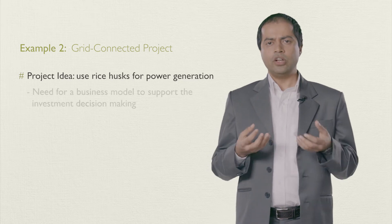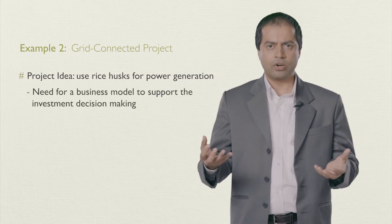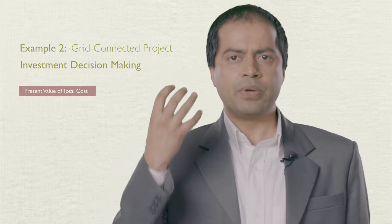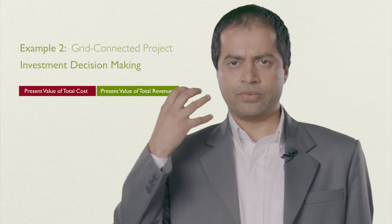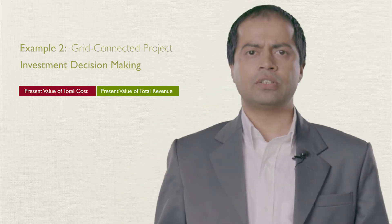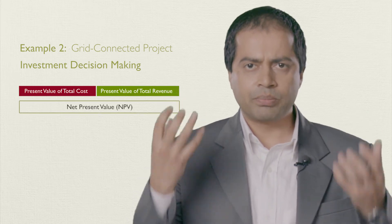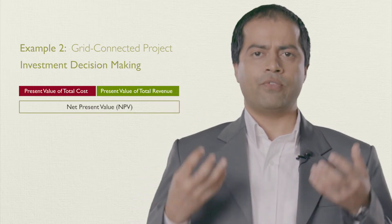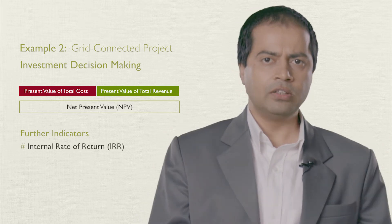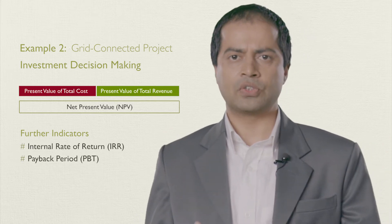Now, the mill owner is interested in its business model to support investment decision making. There are two main aspects. The owner should first analyze the present value of total cost and the present value of total revenue. With these two parameters, the net present value of the project can be calculated. If necessary, other parameters such as internal rate of return or payback period can also be analyzed.